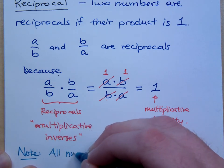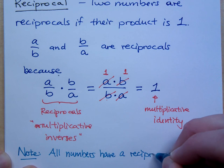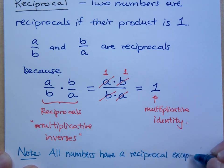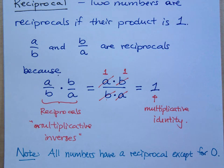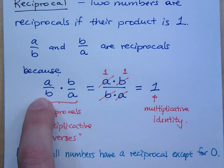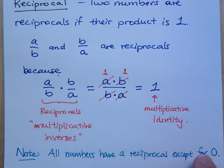All numbers have a reciprocal except for zero. Zero is the one number that does not have a reciprocal. If you look at these fractions, you get the reciprocal just by flipping it upside down. If I flip zero upside down, I would have something like one over zero, but you already know what happens if you divide by zero. You get something that's undefined. So zero doesn't have a reciprocal, but everything else does. And we're going to use that concept of reciprocals to help us do division.